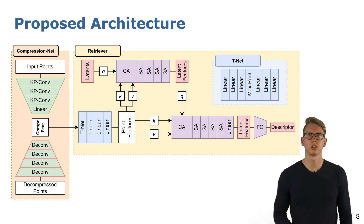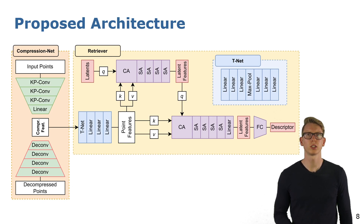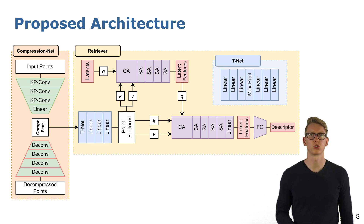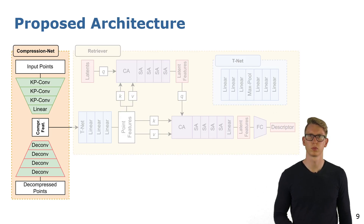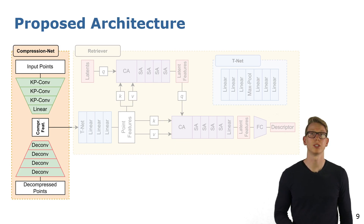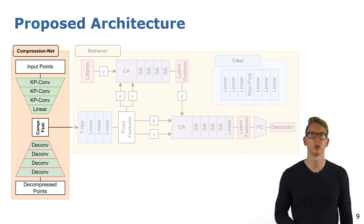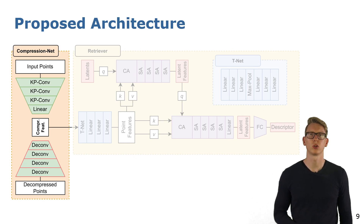Our proposed architecture is divided into two parts: the compression network, which extracts a compact representation and reconstructs the input, and the retriever, which extracts descriptors from the compact point cloud. For the compression network, we use our previous work — a convolutional autoencoder trained in a self-supervised fashion. The bottleneck representation consists of a very sparse, downsampled point cloud with features from which we can reconstruct the input. For dense point clouds, the network achieves a compression ratio of around 1 to 100.